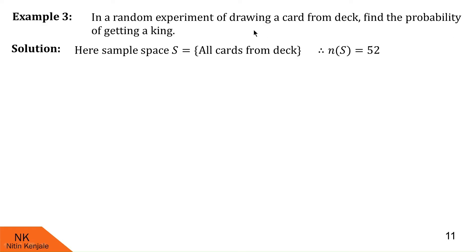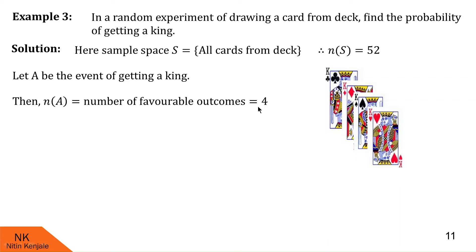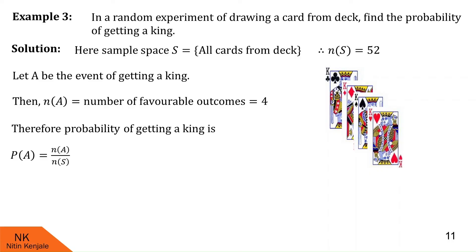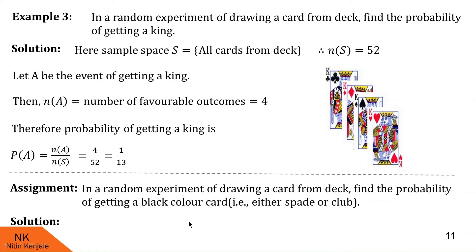We define event A as getting a king. In a deck of cards, there are four different cards with a king face: king of hearts, king of spades, king of diamonds, and king of clubs. So there are four cards favoring this event, meaning N of A equals 4. Therefore, probability of A equals N of A upon N of S, which is 4 upon 52, reducible to 1 by 13.